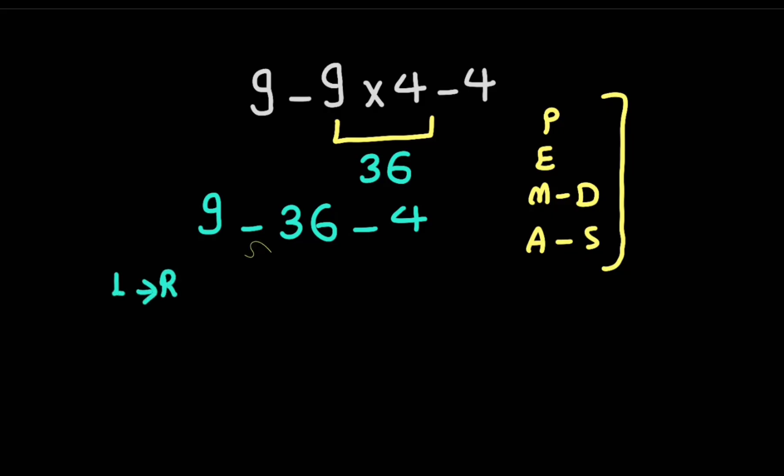Now 9 minus 36 gives us negative 27, and negative 27 minus 4 gives us negative 31.